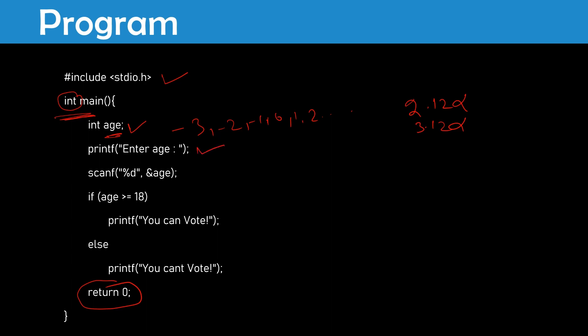We are printing the age just for verification — the person's age is visible on the computer to the person. If age is greater than 18, we print 'you can vote', meaning the person is eligible to vote. Else, the person is not eligible. The return 0 is for syntax purposes since I wrote int main. It is a simple program, that's it — we are done. Thank you for watching.